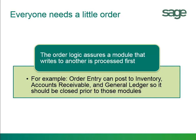For example, order entry posts to the inventory control, and then inventory control processes directly to the general ledger, while order entry processes to the accounts receivable.